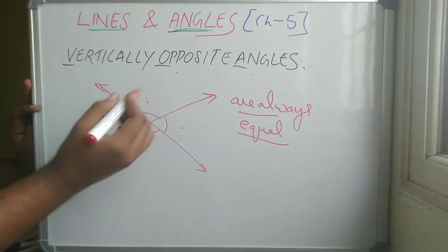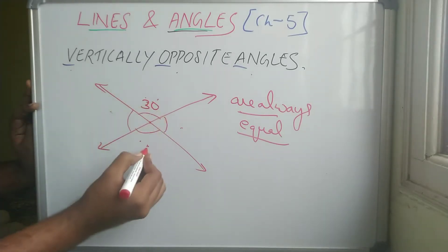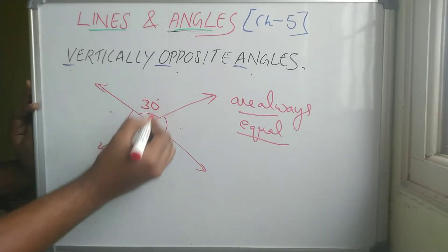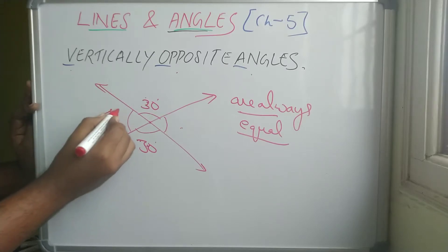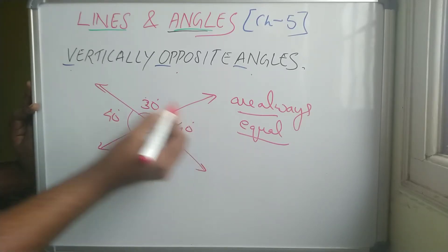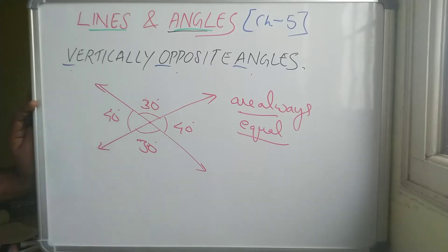Two lines intersecting vertically opposite. If I take this as 30 degrees, what about this will be? This will be 30 degrees because they are equal. This is 40 degrees. Then what about this angle? 40 degrees. Fine. This is the example. Okay.